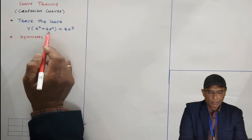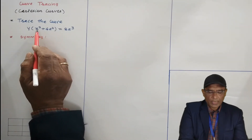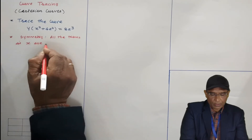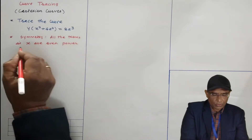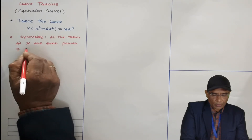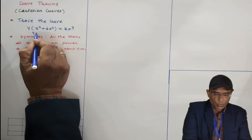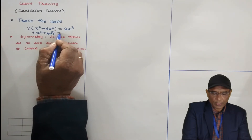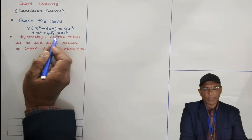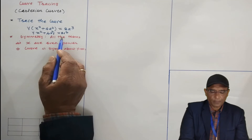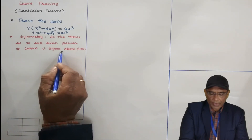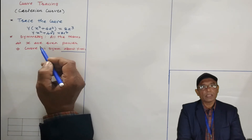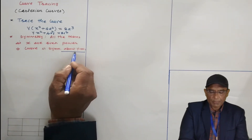In this curve, all the terms in x are even powers. Therefore, the curve is symmetric about the y-axis. If all terms in y are even power, then the curve is symmetric about the x-axis. This curve is symmetric about the y-axis, meaning the same portion of the curve will appear on both sides of the y-axis.